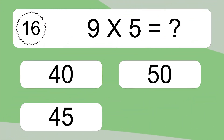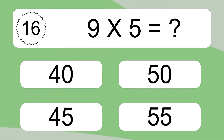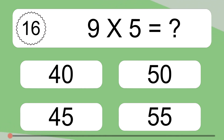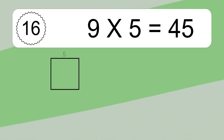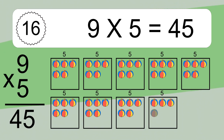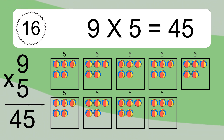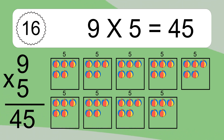9 times 5 equals what? 9 times 5 equals 45. We have 9 boxes, and each box has 5 colorful balls inside. If you count all the balls in all the boxes together, you will have 9 times 5 balls. This equals 45 balls.